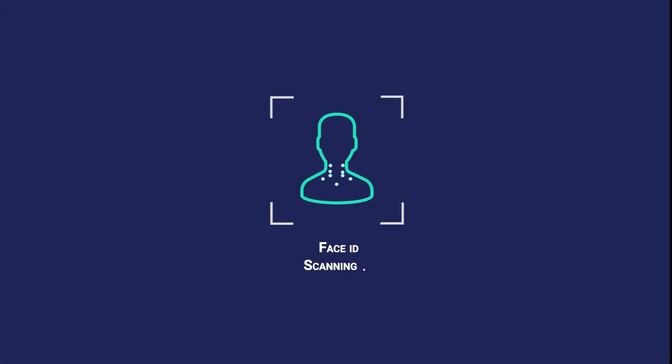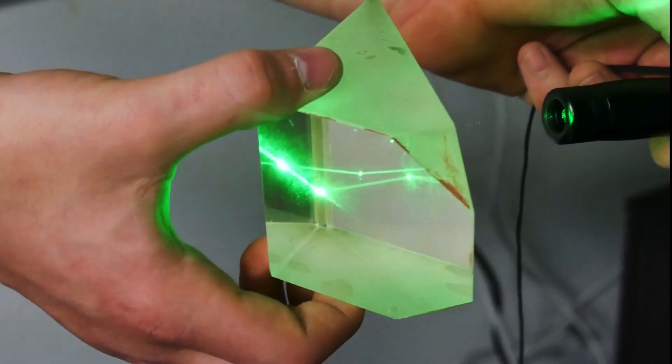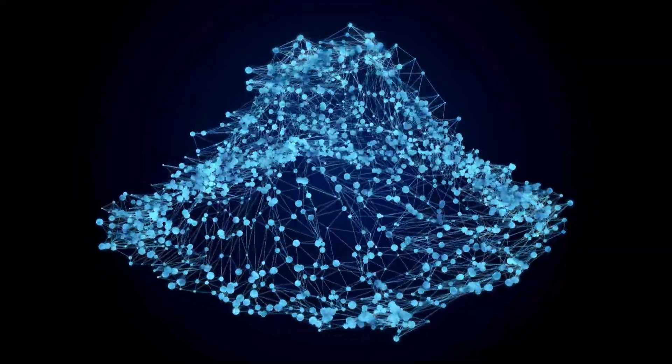The new image is compared to the stored template using advanced algorithms. If the images match, the phone unlocks or grants access to the secure feature. Light reflection and refraction principles ensure accurate face scans.